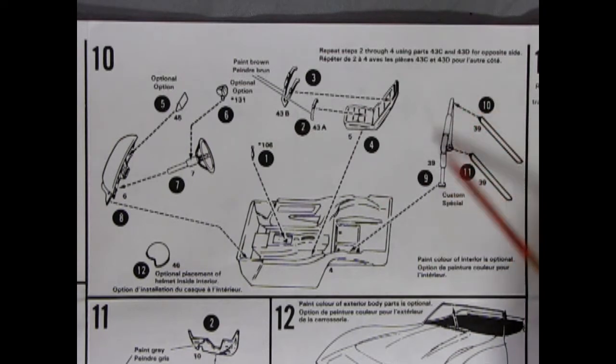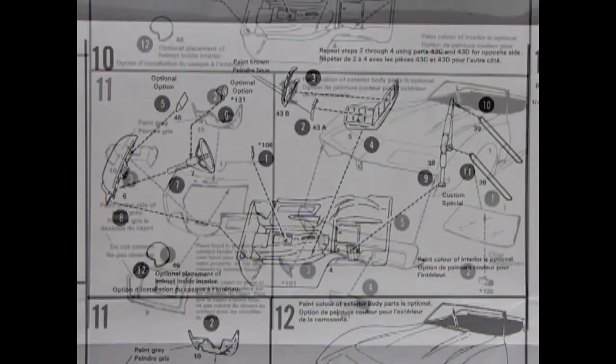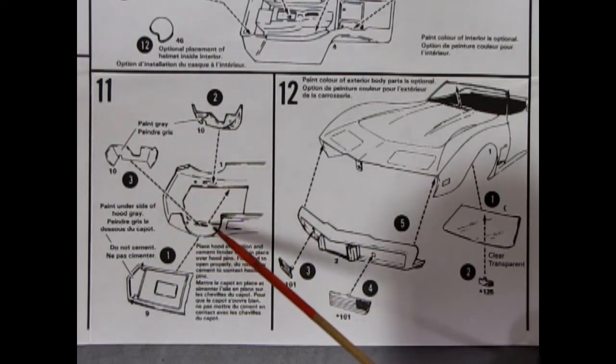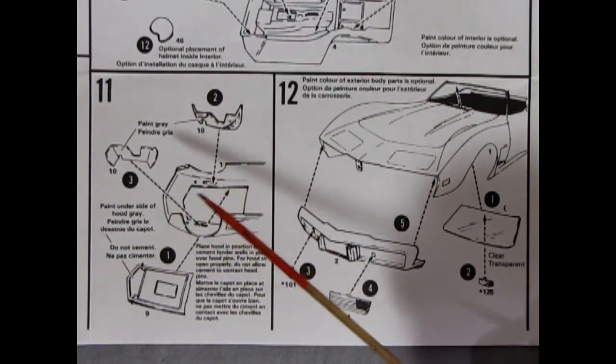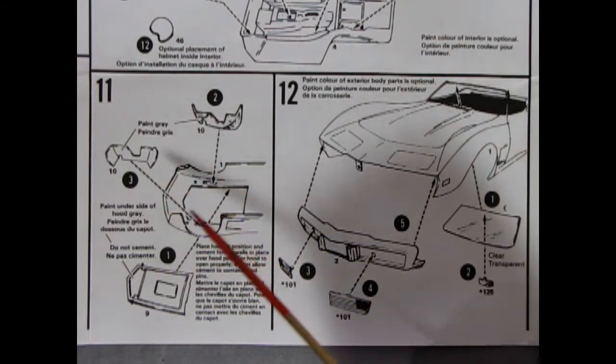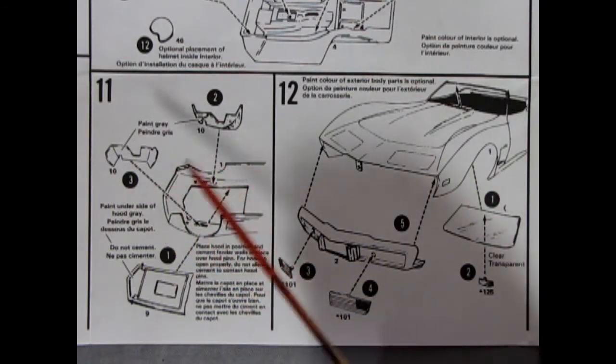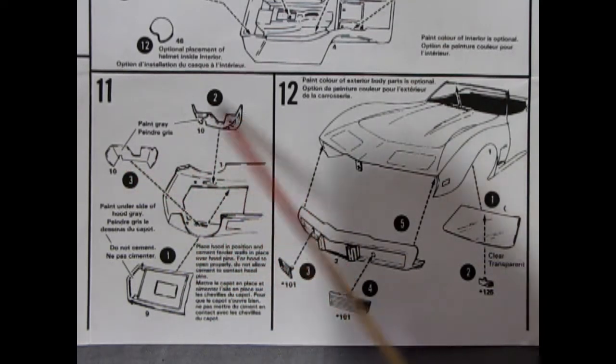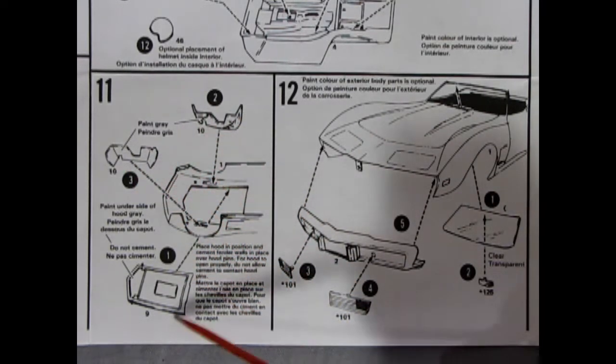And here we have an optional roll bar with the two braces in the back. Very nice racing interior. Over here in panel 11 we can see the inner splash aprons being glued to the inside of the Corvette which seems to be a very popular way that the manufacturers make these model kits. I know that Revell does this the same way. And then you slip your hood in and there's two little notches here on the fender splash aprons to hold that hood in place.